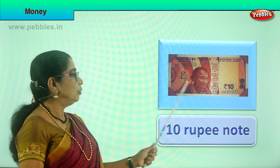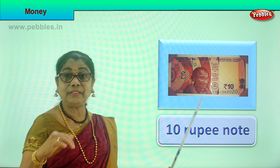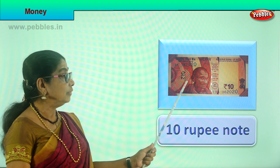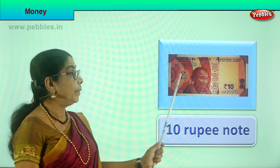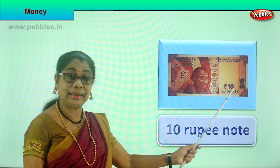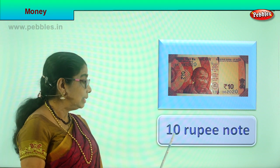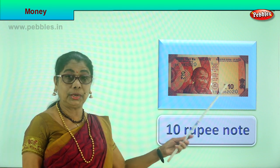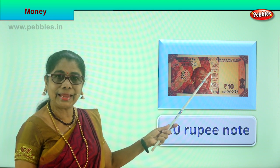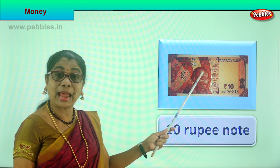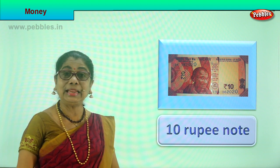Now look - you saw the ten rupee coin. The value of the ten rupee coin and the value of this note are both the same. This note is brown color and it is written 'rupees ten'. This is the ten rupee note. Both values are the same. How do you make it out? It is brown in color, written 'rupees ten'. Look at the ten rupee note that mummy or daddy can show you.